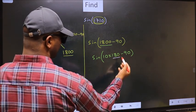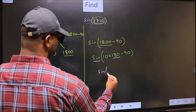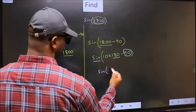Here we have 180, so sign is not going to change. It will remain sign. And inside, we get this angle 90.